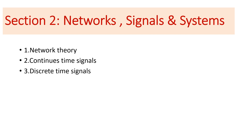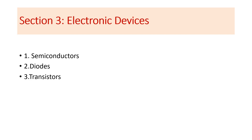In section two, Networks and Signals & Systems, we have three main subjects: Network Theory, Continuous Time Signals, and Discrete Time Signals. Continuous time signals cover concepts like Fourier Series, Continuous Time Fourier Transform, and Laplace Transform. Discrete time signals include concepts like the Discrete Time Fourier Transform.